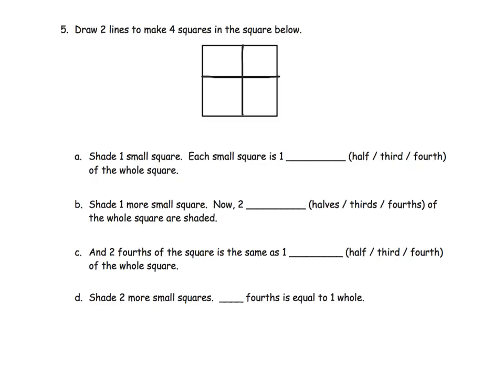It says one small square. Shade in one small square. Oh sure, let's shade in one small square. So I just shaded in one small square. Each one small square is a fourth. It's one fourth, because there's four of them. One, two, three, four.